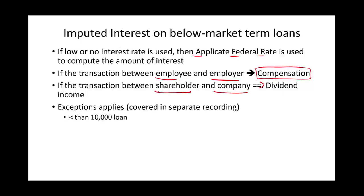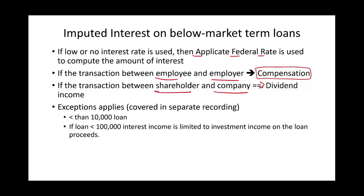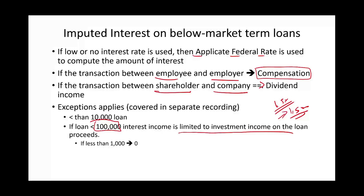There are exceptions to imputed interest rules. If the loan is less than ten thousand dollars, we ignore the imputed interest entirely. If the loan is less than one hundred thousand dollars and used for investment purposes, the interest is limited to the actual investment income earned on the loan proceeds. For example, if you borrow one hundred thousand dollars, invest it in a bond, and earn fifteen hundred dollars, your imputed interest is limited to that amount. If total interest is under one thousand dollars, we disregard it.